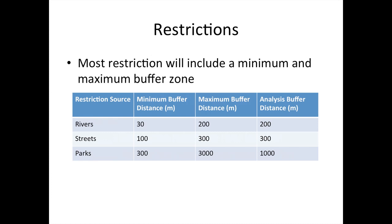Most restrictions include a minimum and maximum buffer zone. The literature suggests that for rivers you use between 300 and 200 meters, for streets between 100 and 300 meters, and for parks between 300 and 3,000 meters. We're going to set our analysis buffer distance: we chose 200 meters for rivers, 300 for streets, and 1,000 meters for parks.